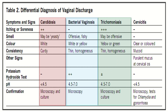In trichomoniasis, itching or soreness is present, smell may be offensive, color is yellow or green, consistency is thin or homogeneous, potassium hydroxide test is positive or negative, pH is 4.5 to 7, and confirmation is by microscopy and culture. In cervicitis, color is clear or colored, consistency is mucoid, other signs include purulent mucus at the cervical os, potassium hydroxide test is negative, pH is less than 4.5, and confirmation is by microscopy and tests for chlamydia and gonorrhea.